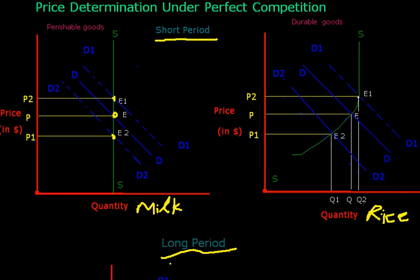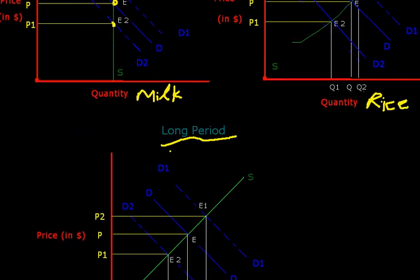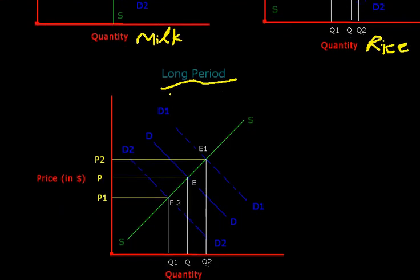Now we discuss the long period. Long period is when we can increase or decrease both supply and demand for achieving profit. Firms will only receive normal profit.